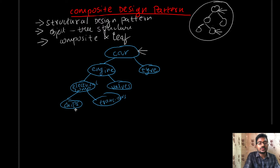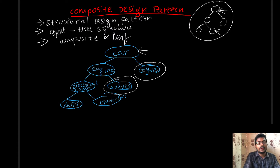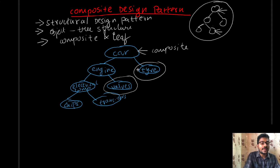Tire, valve, transistor, and chips do not have any child objects, so these are considered leaf objects. Any object containing child objects is a composite object, and objects which don't have any child objects are leaf objects. So tire, valves, transistors, and chips are the leaf objects.